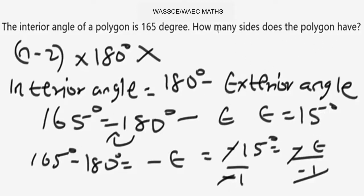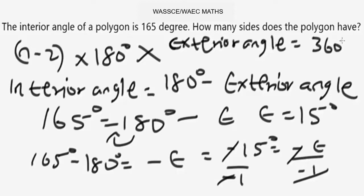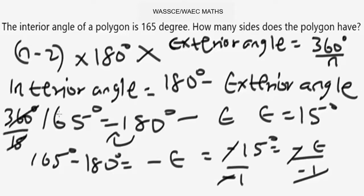Now we need to find how many sides the polygon has, so we apply the exterior angle formula: exterior angle equals 360 degrees over n. Our exterior angle is 15 degrees, so 15 equals 360 over n. Solving for n: n equals 360 divided by 15, which gives 24. That means the polygon has 24 sides. It's as simple as that.